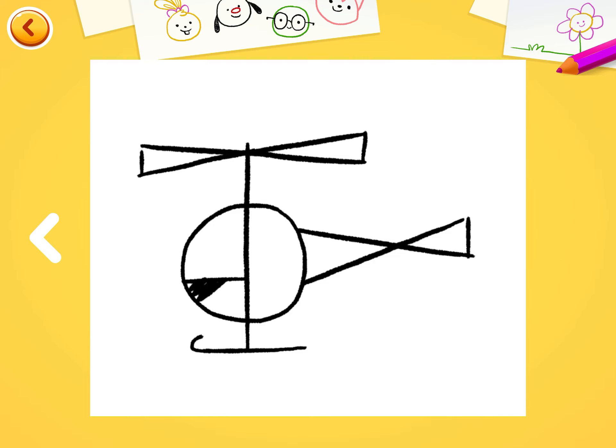For the cabin, let's divide it in three, like this, and paint the parts that are not glass.